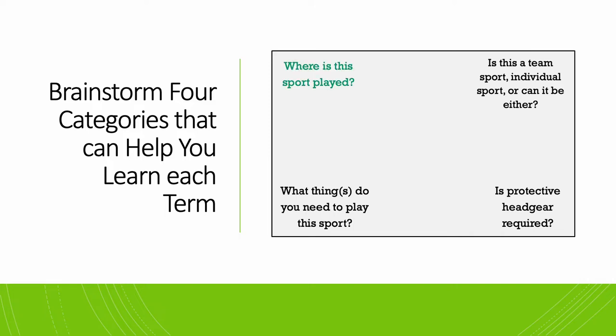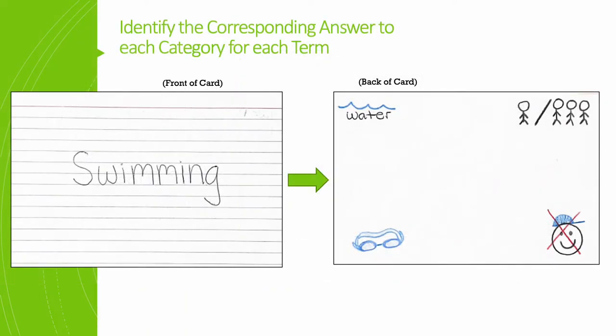For the sports example, the four categories are: where is this sport played — is it an outdoor field, a swimming pool, an ice rink, etc.? Is this a team sport, individual sport, or can it be either? What things do you need to play this sport — do you need a tennis ball, some ice skates, goggles? And is protective headgear required — do you need a helmet or some sort of protective barrier when playing the sport?